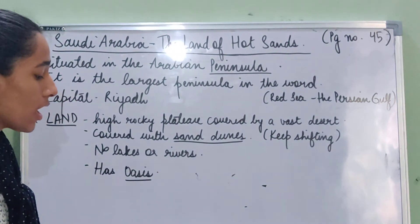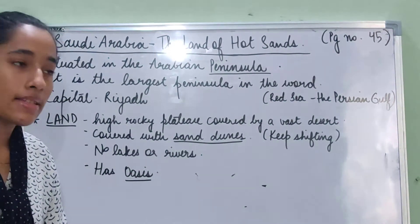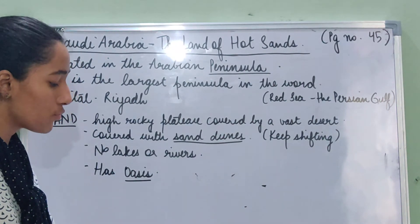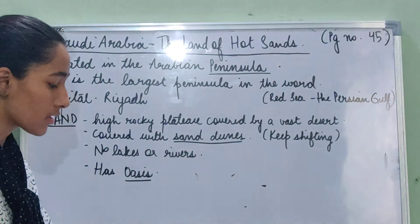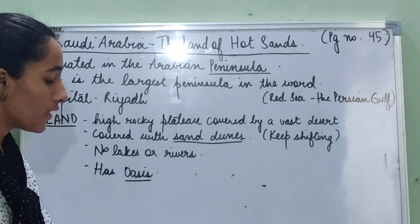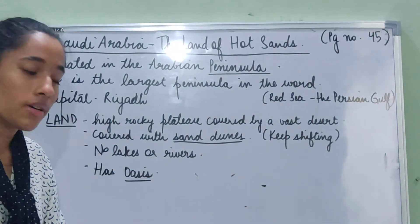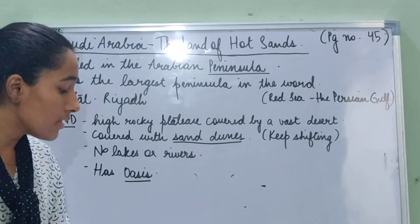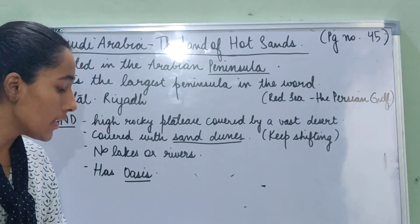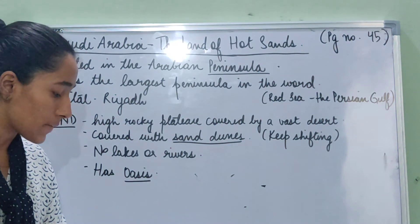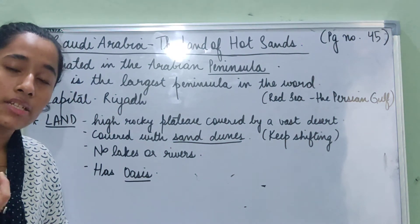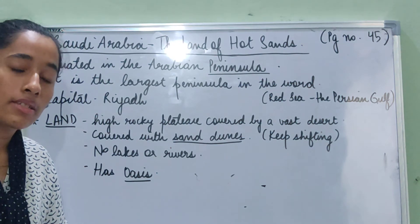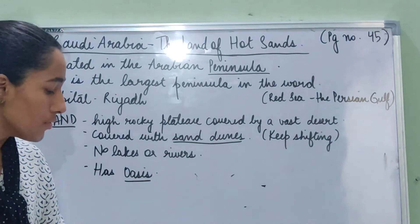Now let's move on to the land of Saudi Arabia. Most of Saudi Arabia is a high rocky plateau covered by a vast desert. The desert is covered with small hills called sand dunes. Sand dunes are small hills of sand that cover most of the desert in Saudi Arabia.